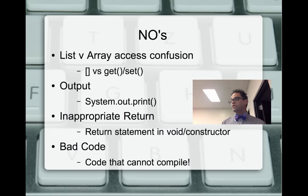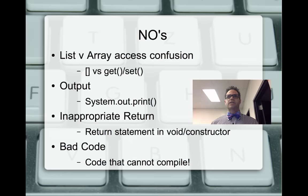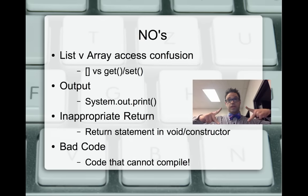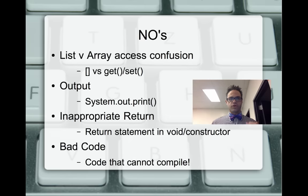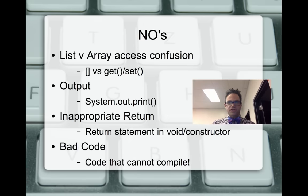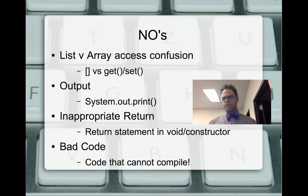A couple of exam no's — guaranteed point deductions. First, don't mix up square brackets and get/set: if dealing with an array, use square brackets; if dealing with an ArrayList, use the get and set methods. Second, don't output to the screen on the free response — no System.out.println, no System.out.print, no System.out.println variants. That's a one-point deduction. Third, watch out for inappropriate returns — especially inside constructors.